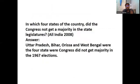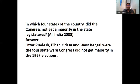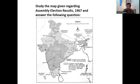In which four states of the country did the Congress not get a majority in the state legislature? Those states are Uttar Pradesh, Bihar, Odisha and West Bengal — these four states where Congress did not have a majority.